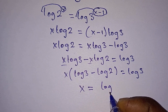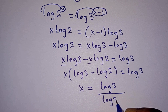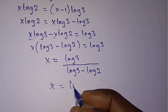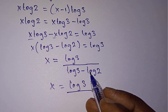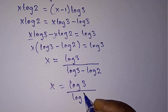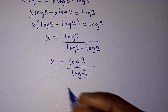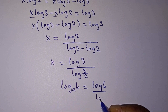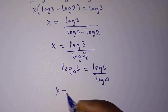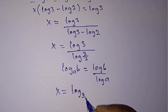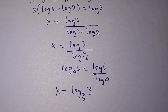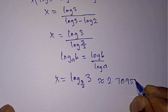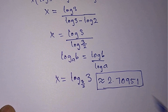We are looking for x, so we divide both sides by (log3 minus log2), giving x equals log3 divided by (log3 minus log2). We can rewrite log3 minus log2 as log(3/2), so x equals log3 divided by log(3/2). By the change of base formula, this is x equals log base (3/2) of 3, which gives approximately x ≈ 2.7951.